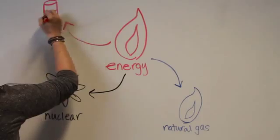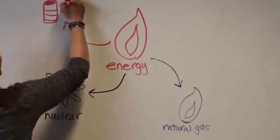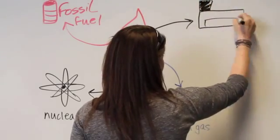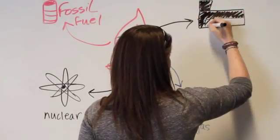Natural gas, coal, nuclear energy, oil, and petroleum products such as gasoline, diesel fuel, heating oil, and propane are the most common non-renewable resources.